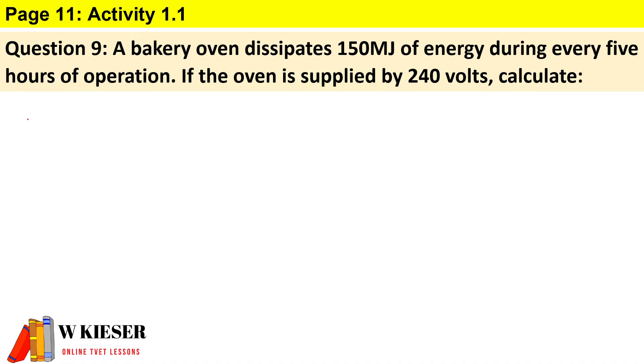In this question taken from an activity in our textbook, Question 9: A bakery oven dissipates 150 megajoules of energy during every five hours of operation. If the oven is supplied by 240 volts, calculate the following.